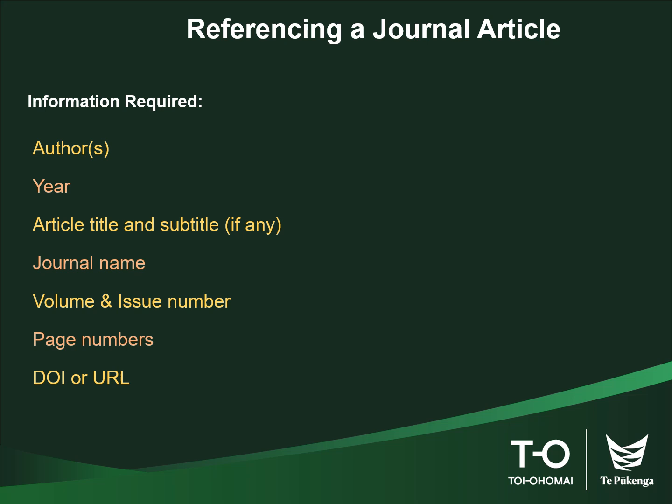To reference a journal article, you need the author or authors of the article, the year it was published in, the title of the article, the subtitle if there is any, the name of the journal that published the article, the volume and issue number, the page range, and finally the DOI number of the article.